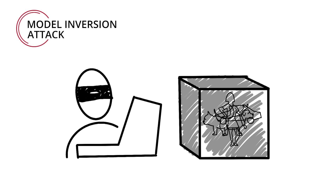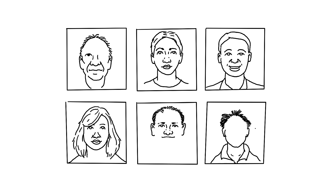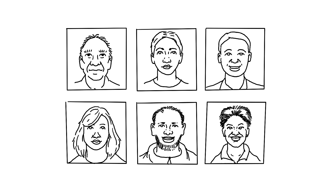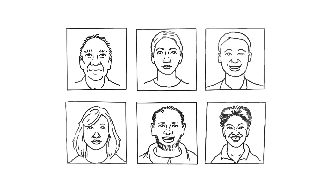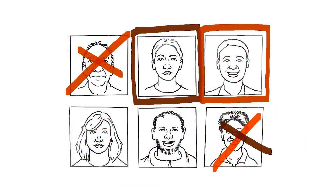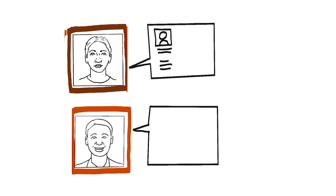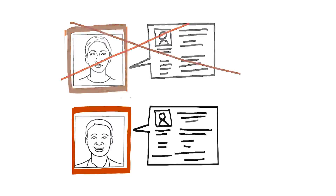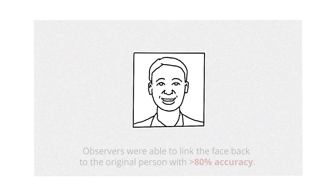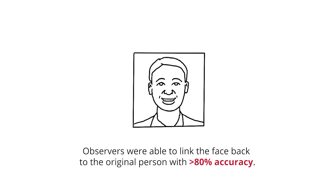If an adversary gains a better understanding of the classes and private data set used, it opens the door to follow-on attacks or compromises the privacy of training data. For example, if a model was trained with a data set of faces, an adversary uses a model inversion attack to turn an initial random noise pattern into a face from the machine learning system. This is done by using a generated noise pattern as input to the trained model, then repetitively refining the pattern until confidence levels increase. The noise pattern eventually starts looking like a face, and when presented to human observers, they were able to link it back to the original person with greater than 80% accuracy.